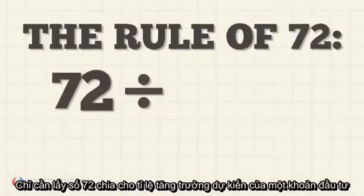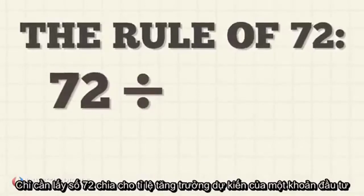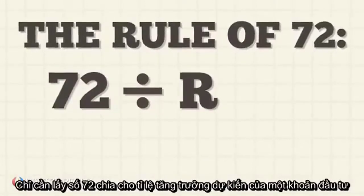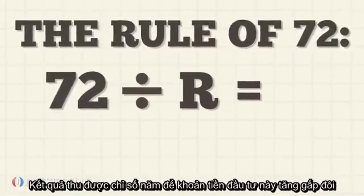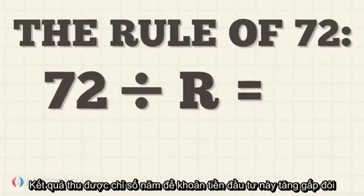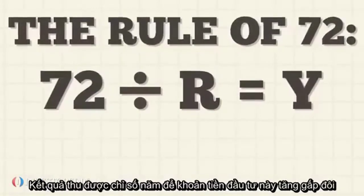Just divide the number 72 by the expected growth rate of an investment. The resulting figure represents the number of years it will take your money to double.